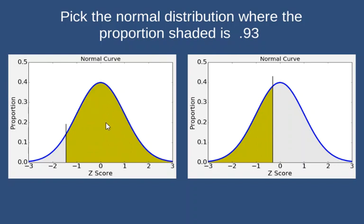The distribution where 0.93 is shaded, so here we go. And if I'm looking for 0.25, obviously it's going to be less than half. 0.33 is going to be less than half.